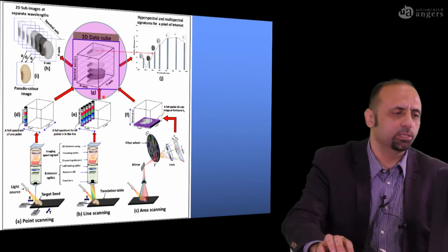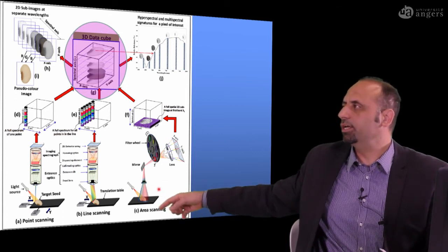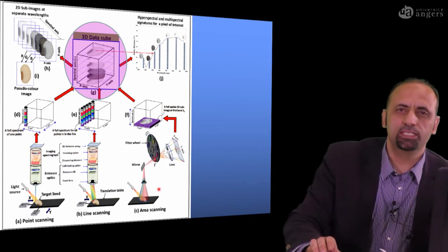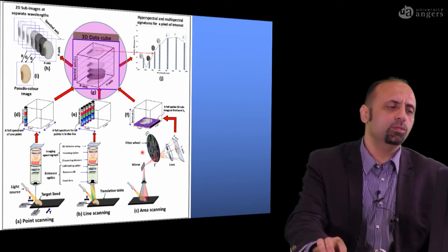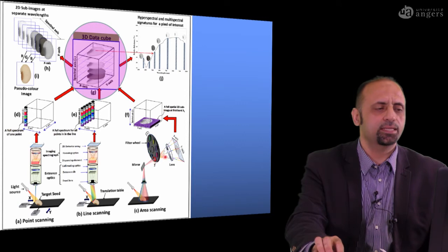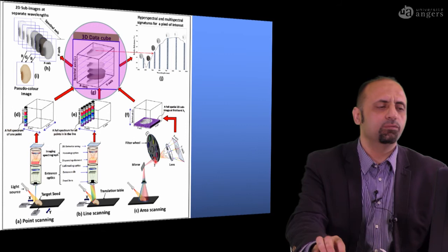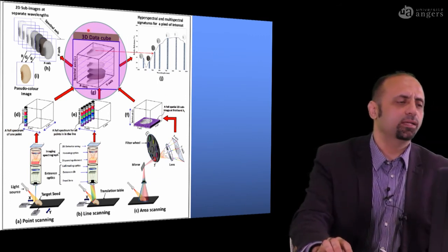The third scenario is to acquire the image using the whole area at once. Instead of moving the sample point by point or line by line, we do not move the sample at all — we acquire the image wavelength by wavelength. To do this, we use a filter wheel: reflected light from the sample passes through a filter at a certain wavelength and is received by the camera, giving a full 2D image at that wavelength. The filter wheel then moves to the next filter, a new 2D image is acquired, and this continues until all filter wheel bands are completed, giving us the final 3D data cube.